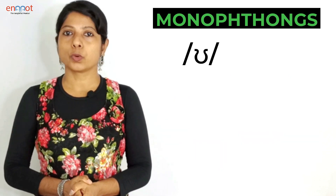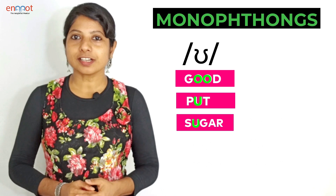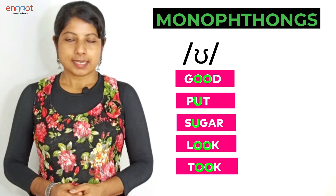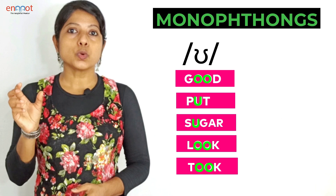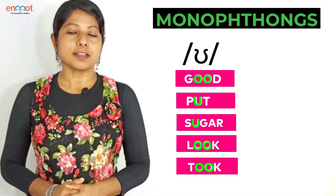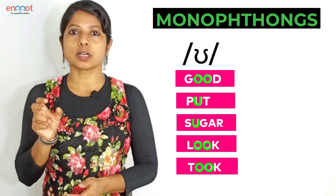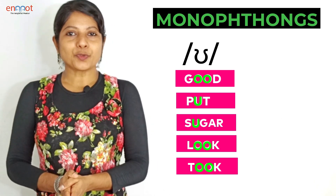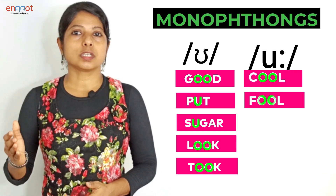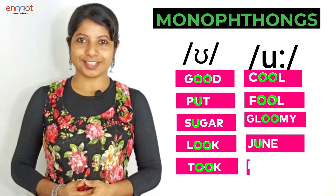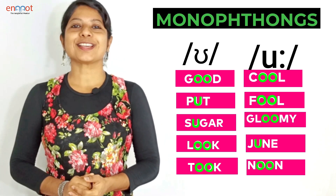The next monophthong is /ʊ/ and the words are: good, put, sugar, look, took. In the word 'good' the letters OO produce the sound /ʊ/, and in 'put' and 'sugar' the letter U produces the sound /ʊ/. The next vowel sound is /uː/ and the words are: cool, fool, gloomy, June, noon. /ʊ/ is a short vowel and /uː/ is a long vowel.